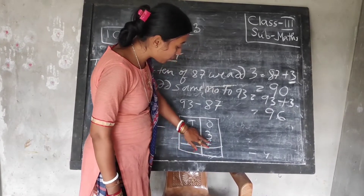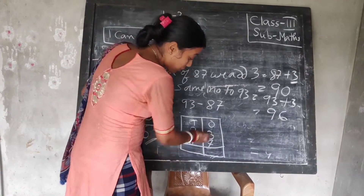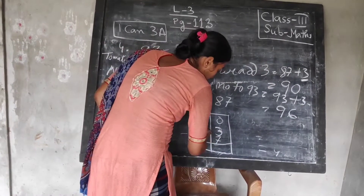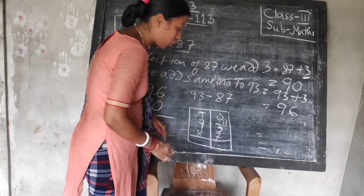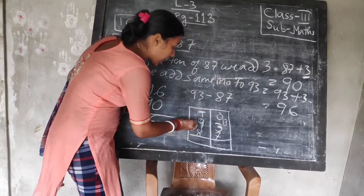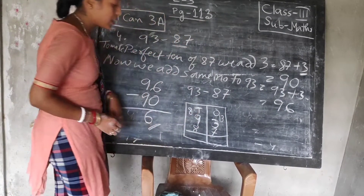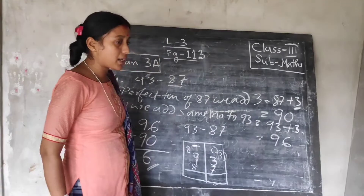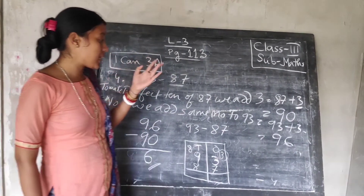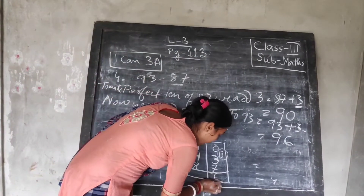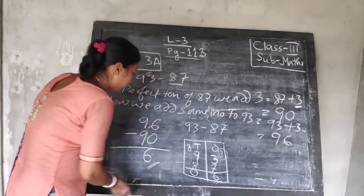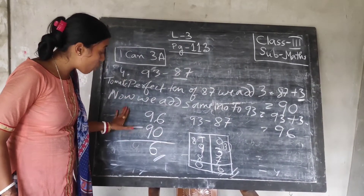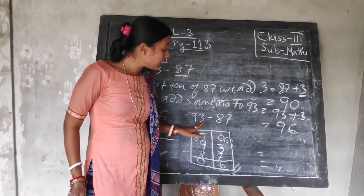How will you do 93 minus 87 directly? 3 minus 7, you can't do — from 3, you can't minus 7. 7 is a bigger number and 3 is a smaller number. So, what you have to do? You have to borrow 1 from here. If you borrow 1 from 9, it will become 13. After borrowing, it becomes 13. And you have taken 1 from here, then this will be how much? 8 — because 9 minus 1 is 8. Now, you have to subtract 7 from 13: 13 minus 7 — 1, 2, 3, 4, 5, 6. And 8 minus 8 is 0. So, we are getting the same answer.